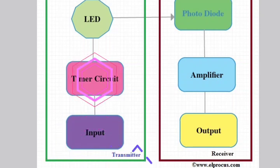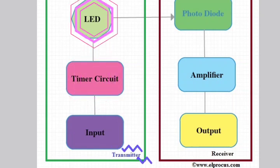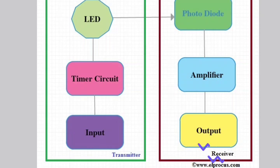The timer circuit in this section is used to provide the necessary time intervals among every bit and these are transmitted to the receiver end in the form of LED flashes.